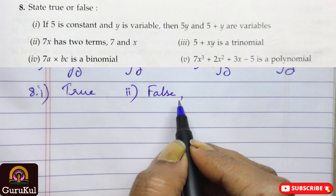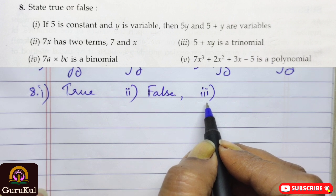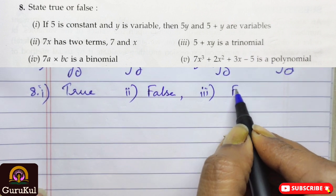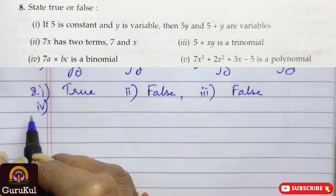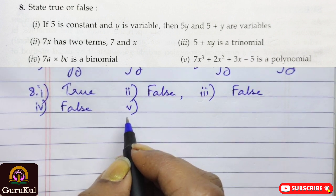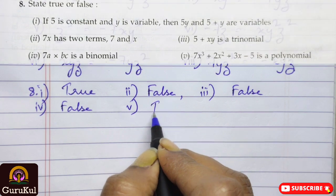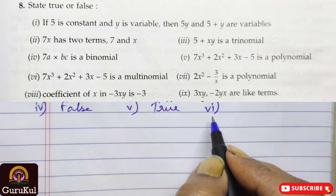Number 3, 5 plus xy is a trinomial, false. Number 4, 7a into bc is a binomial, again this is false. Number 5, 7x cube plus 2x square plus 3x minus 5 is a binomial, true.